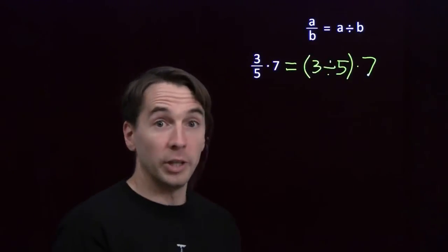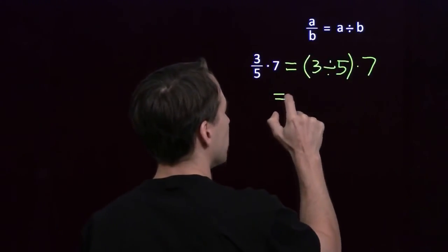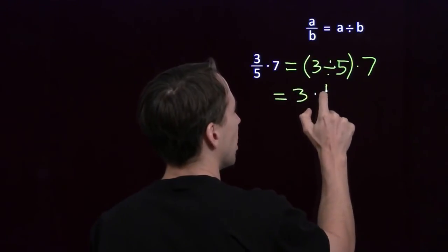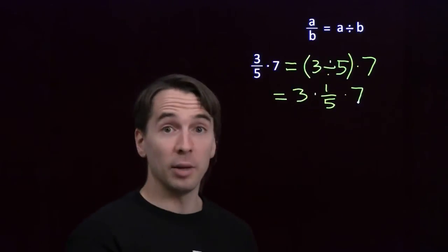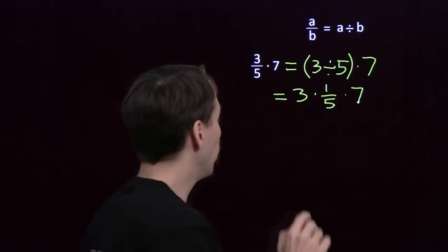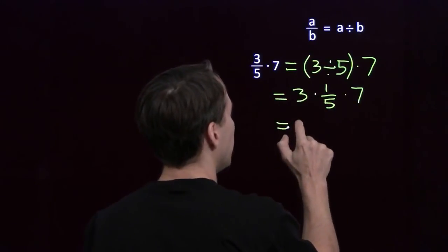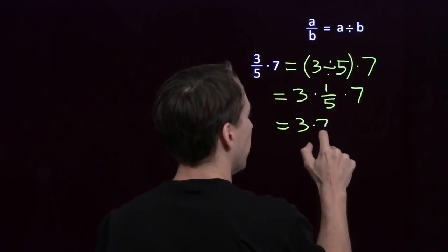And then we're going to multiply this by 7. Well, 3 divided by 5, we can turn that into a multiplication problem using our definition of division. This is just 3 times 1 over 5, and then times 7. Now, of course, one of the nice things about having a multiplication problem is we can multiply in whatever order we want to. We can rearrange these. We can put the 3 and the 7 together, because we know how to multiply those.